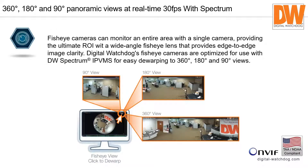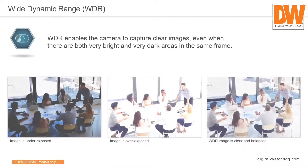We do excellent dewarping through Spectrum — 360, 180, and 90-degree views. Spectrum does the dewarping on the client side, so the camera creates no extra load on the server: it's the same load as a standard 5-megapixel or 9-megapixel camera. Many other VMS manufacturers have to pull separate streams from the camera or do dewarping at their server, which creates more load on the server.